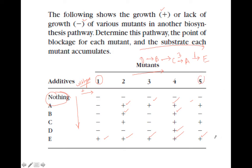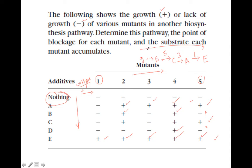In the same way, mutant number 5 will grow in the presence of E, A, or C, but not in the presence of B or D. This means mutant 5 is between B and C. If you provide C, A, or E it will grow, but if you provide B or D it will not grow.